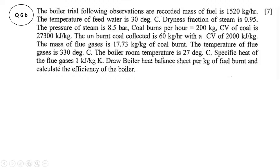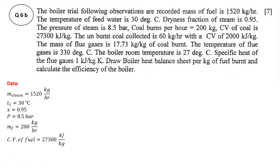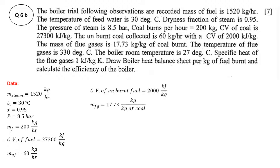Temperature of flue gases is 330 degrees centigrade, boiler room temperature is 27 degrees centigrade, and specific heat of flue gases is 1 kJ per kg Kelvin. Importantly, in this case we have to draw the heat balance sheet per kg of fuel burned, so all values must be expressed per kg of fuel burned. For example, the mass of flue gases formed is 17.73 kg per kg of coal burned. The data includes: mass of steam, temperature of feed water, dryness fraction, pressure of steam, mass of fuel burned, calorific value of fuel, mass of unburned fuel, calorific value of unburned fuel, mass of flue gases, temperature of flue gases, boiler room temperature, and CP of flue gases as 1 kJ per kg Kelvin.